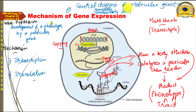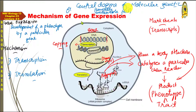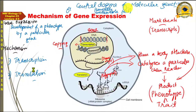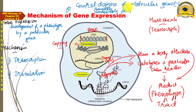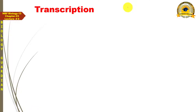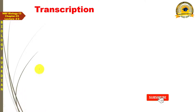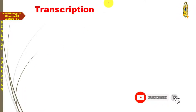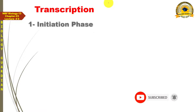Last lecture میں آپ کو introduction provide کیا تھا mechanism of gene expression کے حوالے سے اور اس میں concept of central dogma کی بھی ہم نے بات کی تھی۔ آپ نے دیکھا تھا کہ mechanism of gene expression دو steps پر مشتمل ہوتا ہے - پہلا step transcription کہلاتا ہے اور دوسرا translation۔ آج کے لیکچر میں ہم transcription کے process کو detail سے discuss کرتے ہیں اور generally define کریں گے what is transcription۔